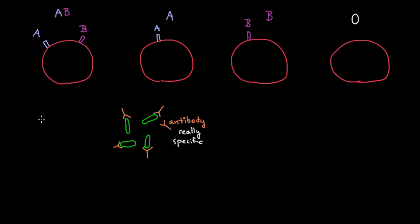This person with type AB blood will make antibodies against bacteria and all different kinds of viruses. But very importantly, he will not make antibodies against B or A. The reason is that if he did make antibodies against B or A, they would bind to all his red blood cells by binding to these little A and B proteins, and then he'd be in trouble.